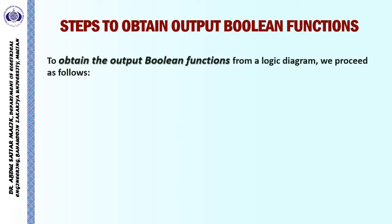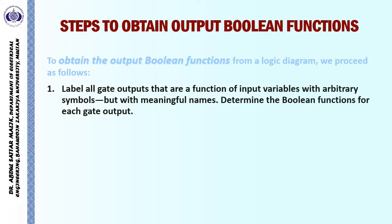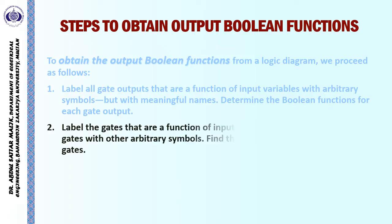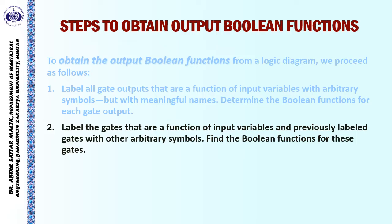To obtain the output boolean functions from a logic diagram, we proceed as follows. During step one, we label all gate outputs that are a function of input variables with arbitrary symbols but with meaningful names. In the second step, we label the gates that are a function of input variables and previously labelled gates with arbitrary symbols.